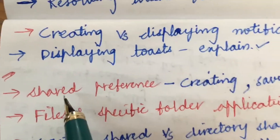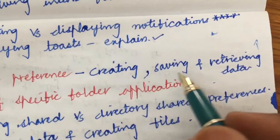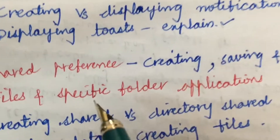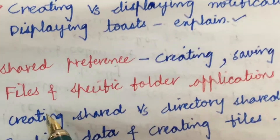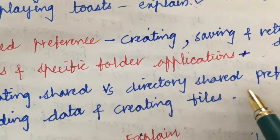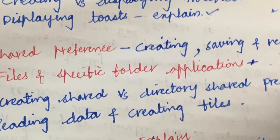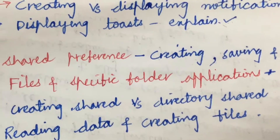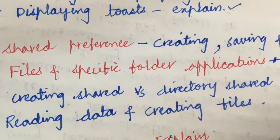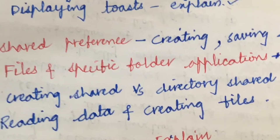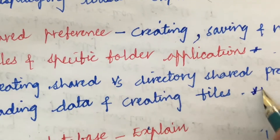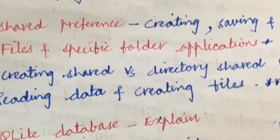What is shared preference, and explain creating, saving, and retrieving data — this may be one of the gunshot questions, and you are going to get one question from this part. Files, specific folder applications, and creating shared versus directed shared preference differences are also important. I hope you are taking your exam neatly, using two sets of pens, and doing all diagrams, flow charts, and algorithms in pencil. Reading data and creating files — explain in detail — may also fetch you one question.